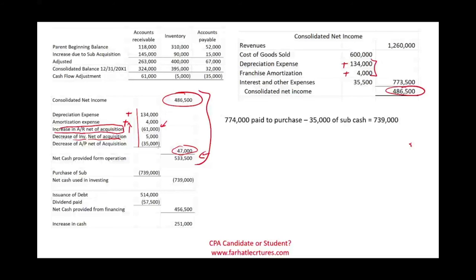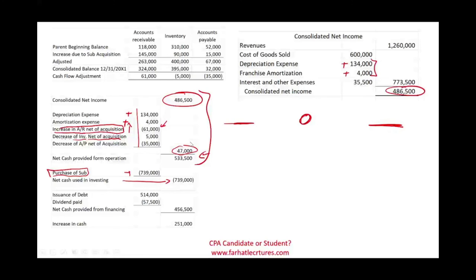For the investing section: we purchased the subsidiary and paid $774,000. However, the subsidiary had $35,000 in cash on their balance sheet. Therefore, the net cash outflow is only $739,000 — we paid $774,000 but immediately received $35,000 back. Net cash used in investing activities is $739,000.